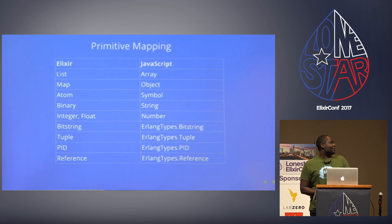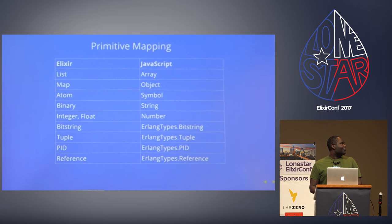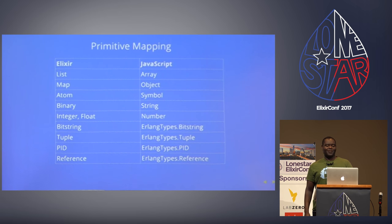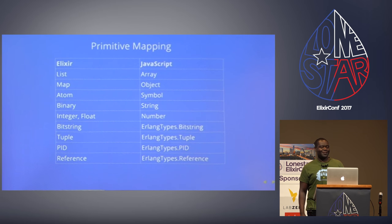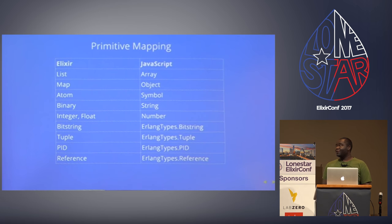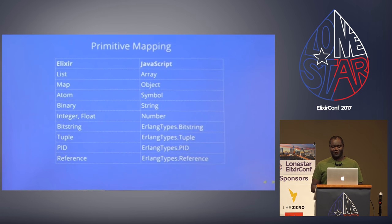Here is a mapping of how ElixirScript handles primitives: a list turns into a JavaScript array, a map into an object, an atom into a symbol, a binary into a string, and integers and floats into numbers. For bit strings, tuples, PIDs, and references, the Erlang types library provides JavaScript implementations.